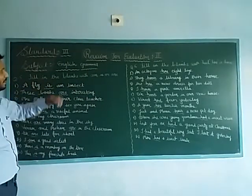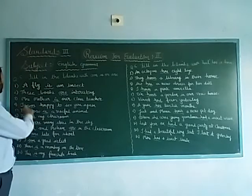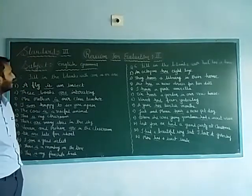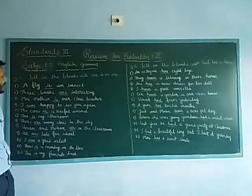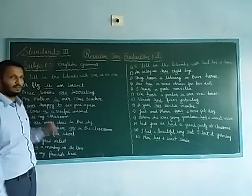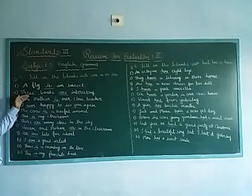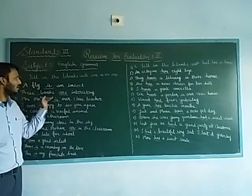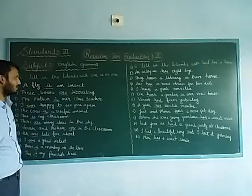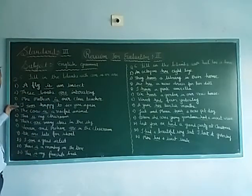Question number six: fill the blanks with 'is' or 'are'. First number: a fly blank an insect. The answer is 'is' — a fly is an insect. Second number: these books blank interesting. The answer is 'are' — these books are interesting.